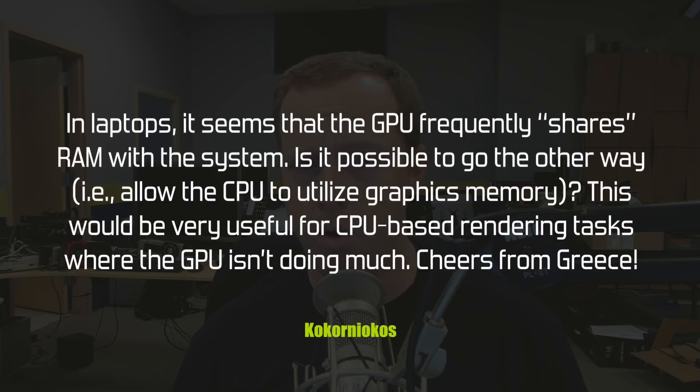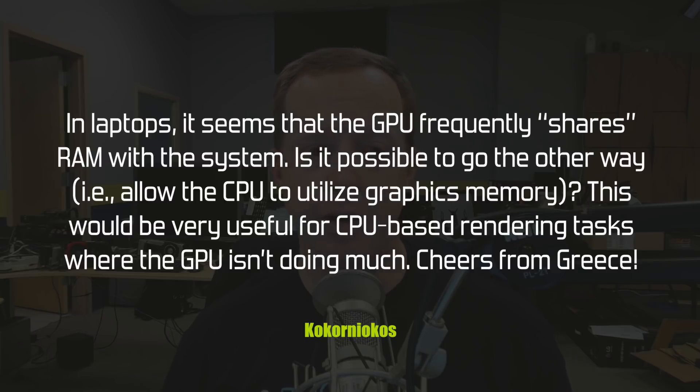Kokonorikos asks: in laptops it seems that the GPU frequently shares RAM with the system. Is it possible to go the other way — allow the CPU to utilize graphics memory? This would be very useful for CPU-based rendering tasks where the GPU isn't doing much. Cheers from Greece. What you're seeing in laptops is when you have a CPU with integrated graphics — basically every Intel Core processor in a notebook form has integrated graphics, the new Ryzen Mobile part announced this week has integrated graphics, and all the APUs from AMD have integrated graphics. There are basically two ways you could possibly do this.